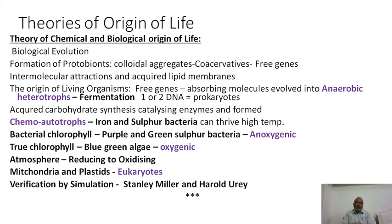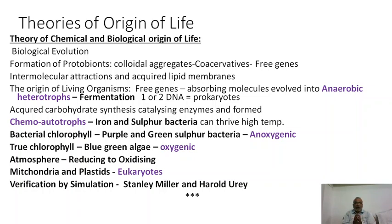These prokaryotic anaerobic heterotrophs, with fermentation as their energy source, gradually over a course of time might have changed into chemoautotrophs. Chemoautotrophs are iron or sulfur bacteria that can thrive at high temperatures near volcanic eruptions. They utilize heat as an energy source and synthesize their own chemicals such as sugars and proteins — hence they are called autotrophs. Since they use chemical energy, they are specifically called chemoautotrophs.